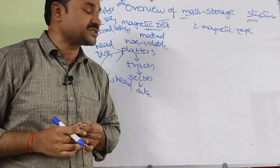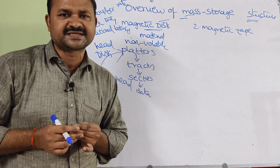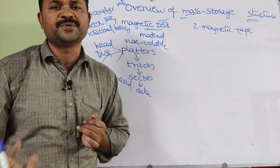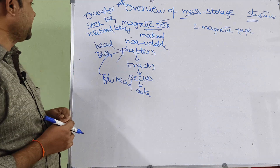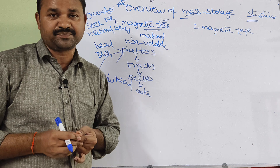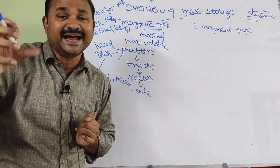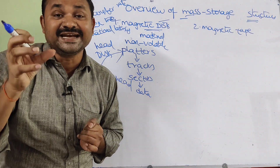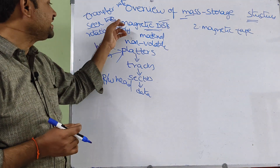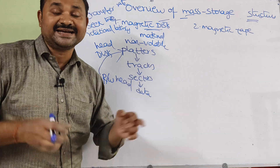Transfer rate is the time which specifies the transfer of data from the hard disk to the computer. The next parameter is seek time. Seek time is the time taken by the read/write head to move to the desired track. Since the platter is a collection of tracks, seek time is the time taken by the read/write head to reach the correct desired track.